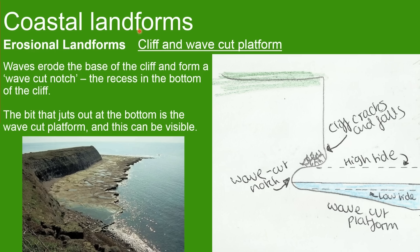Now we're looking at coastal landforms, starting with erosional landforms. The first example is a cliff and wave cut platform. As waves erode the base of a cliff they form a wave cut notch. This causes cracks to form in the cliff, and as the water moves up to high and low tide this shapes the wave cut notch. The bit that juts out at the bottom is the wave cut platform, which can be visible as seen in the picture here.